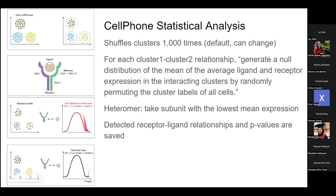They create this null distribution and then take the true cluster labelings and determine whether the average expression is significant based on that null distribution. It's very simple, and it takes a while to do this 1,000 times.